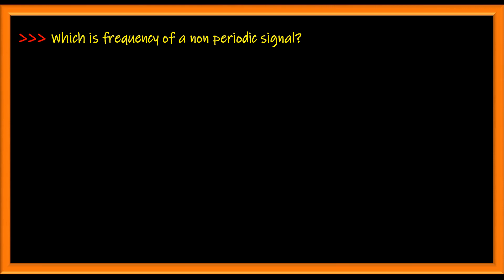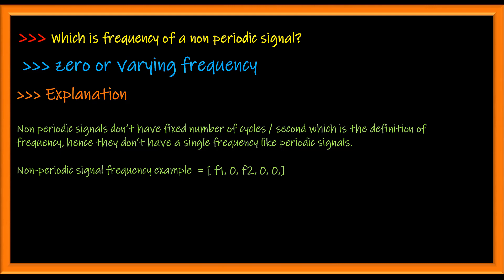What is the frequency of a non-periodic signal? The frequency of a non-periodic signal is either zero or a varying frequency, meaning a non-periodic signal will not have the same frequency at different instants of time. The frequency keeps varying since there is no periodicity or pattern in the signal.